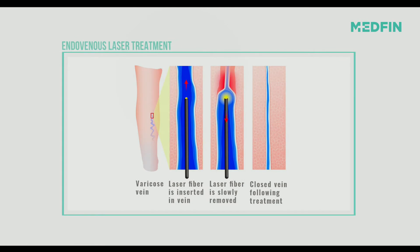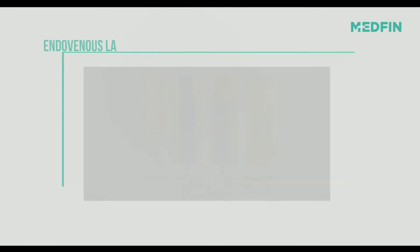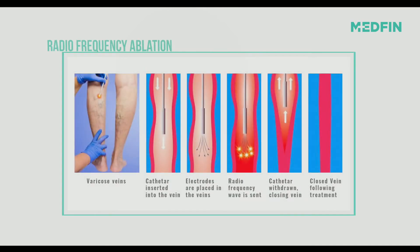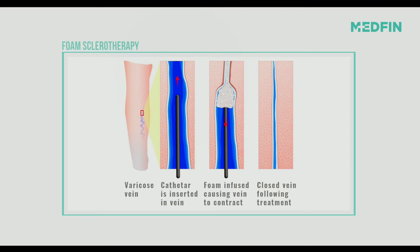Laser and radio frequency ablation use the same basic technique to close the varicose vein. A small needle is inserted and either a laser fiber or radio frequency ablation fiber is passed into the varicose vein. Using thermal energy, we close the varicose vein and then pull out the fiber. Sclerotherapy uses foam — a foam sclerotherapy agent — which is an irritant injected into the vein that damages the endothelium and closes off the varicose vein.